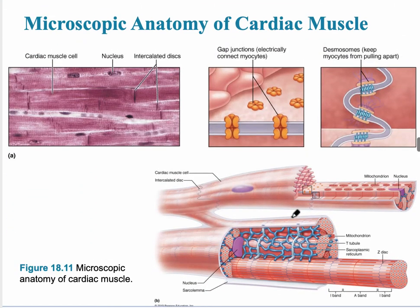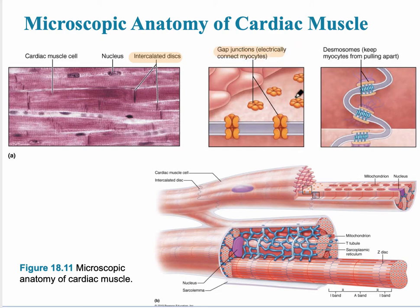The microscopic anatomy of cardiac muscle looks different from skeletal muscle under a microscope. The predominant difference is the intercalated disc. There's also some space between the cells, which you wouldn't see in skeletal muscle. The intercalated disc has gap junctions within it, allowing ions to move quickly from cell to cell, and desmosomes which prevent the myocytes from pulling apart.